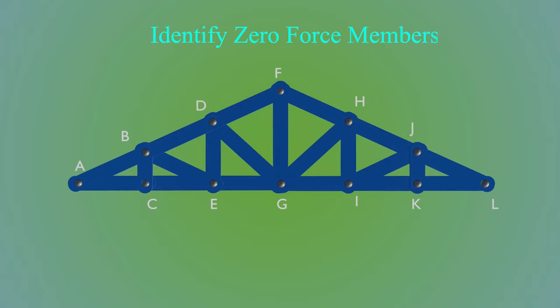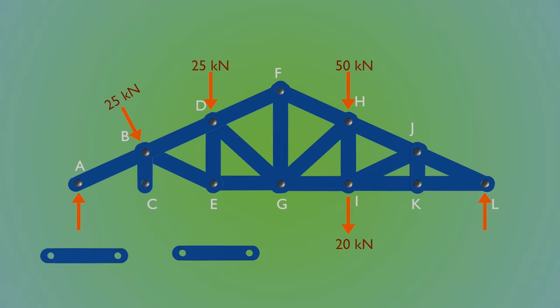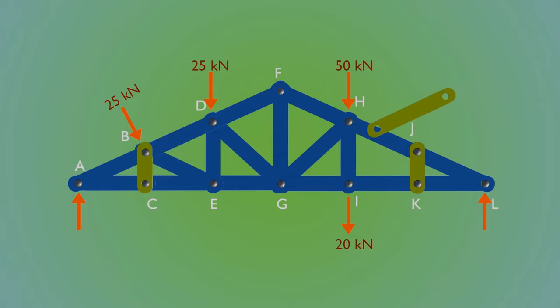Now consider another example, a how truss is loaded as shown. Joint C connects three members, two of which lie in the same line, and is not subjected to any external load. Member BC is thus a zero force member. Applying the same reasoning to joint K, we find that member JK is also a zero force member. But joint J is now in the same situation as joints C and K, so member IJ also must be a zero force member.